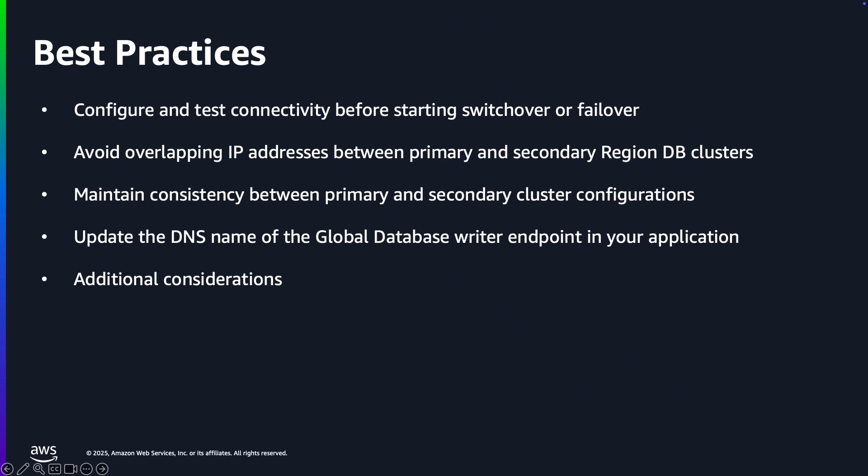Avoid overlapping IP addresses between the primary and secondary region DB clusters. We recommend creating separate CIDR blocks for regional VPCs to prevent application connections from resolving to an incorrect IP address in a different region when the primary region changes.